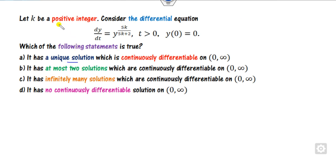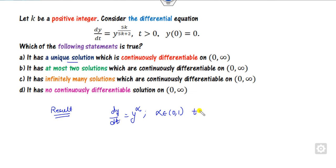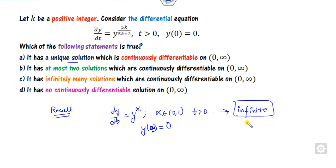The second question asks you to find the unique solution, at most, and so on. There is no need to solve this one — you can simply remember the result. The common result is: if you have a differential equation of the form y raised to power alpha, where alpha lies between 0 and 1, and any one initial condition is given, then this always has infinitely many solutions — provided alpha lies between 0 and 1.